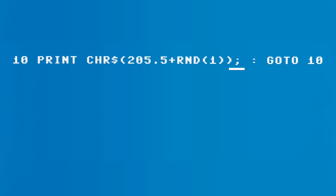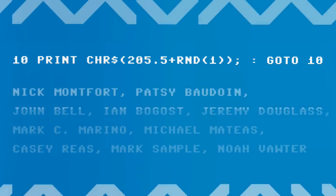To finish the code: there's a semicolon right after the CHR$ call, which tells PRINT not to display a new line at the end — so the next call to PRINT continues on the same line. Next is a colon, which is just a line separator allowing more than one statement on a single BASIC line. Finally, GOTO 10 is an unconditional jump back to line 10 — the line we're on — so it's an infinite loop.